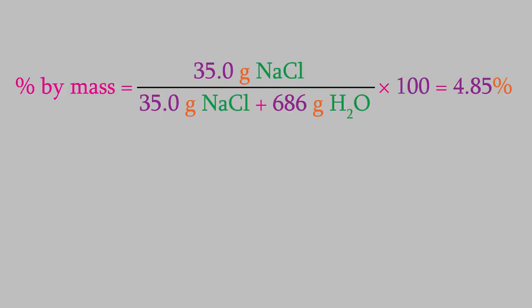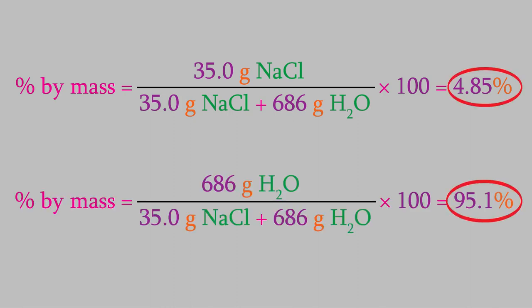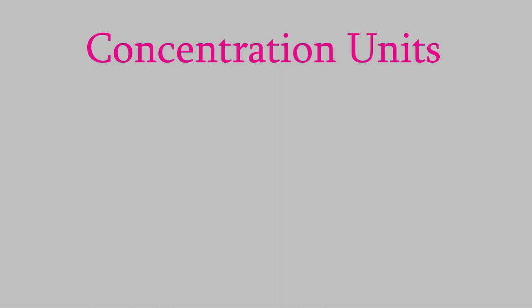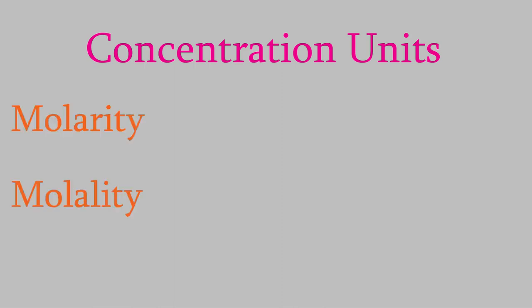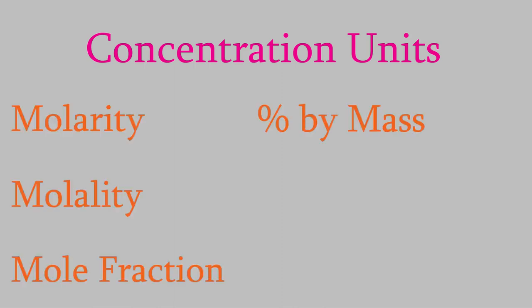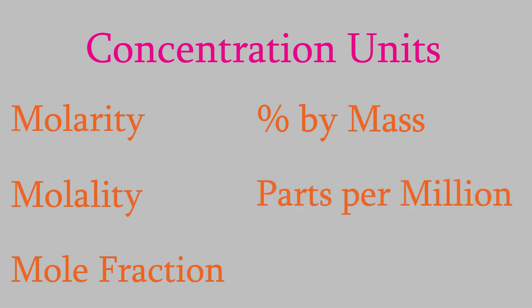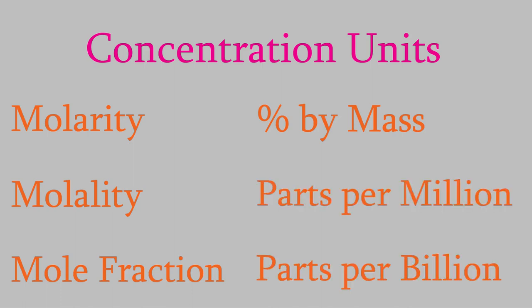Notice that the percent by mass for the NaCl and the water add up to give us a total of 100%. Since our solution only contains NaCl and water, it makes sense that the two of them together total 100%. So these are all the concentration units we've learned: molarity, molality, mole fraction, percent by mass, parts per million, and parts per billion.